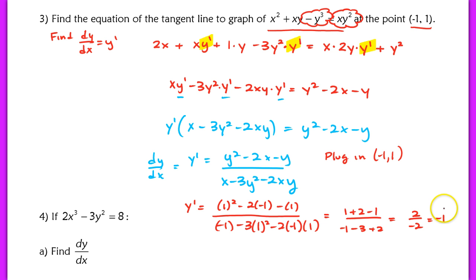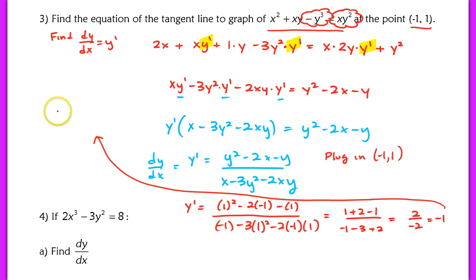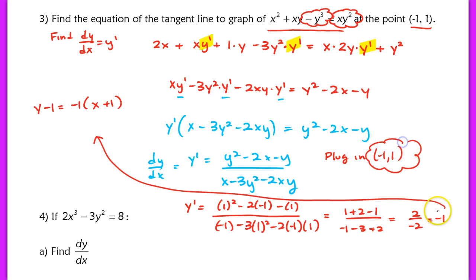Therefore, the equation of our tangent line is y minus 1 equals negative 1 times the quantity x plus 1, using the coordinate negative 1, 1 and slope m equals negative 1.